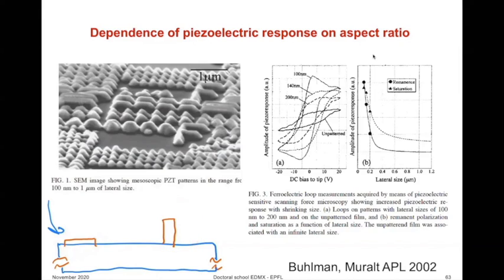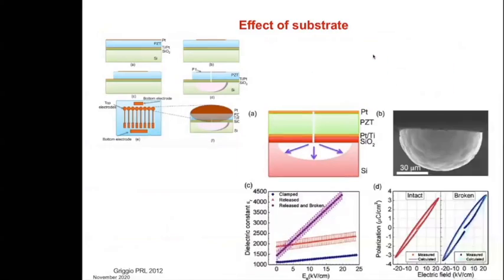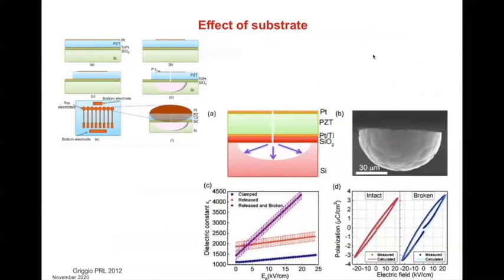Here you have examples of piezoelectric hysteresis. Looking at the values at the intersection, for the flat film we have a much lower piezoelectric coefficient than for the tall, so-called skyscraper film, because the clamping is much more reduced in the taller geometry.